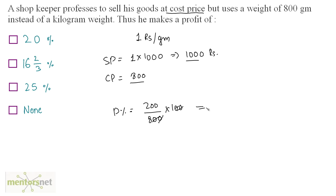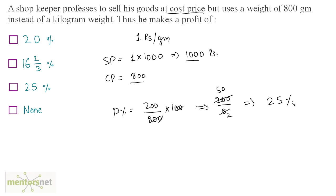The zeros cancel out, leaving 200 by 8. Since 4 times 50 is 200, this equals 25%. So Option C is the correct answer.